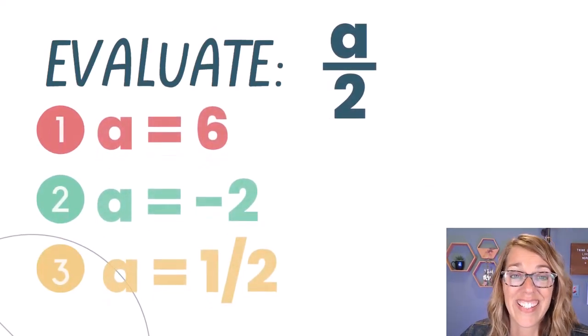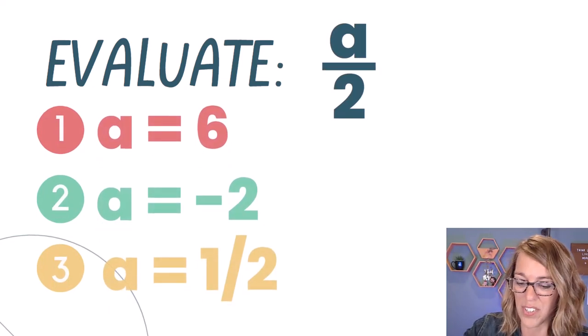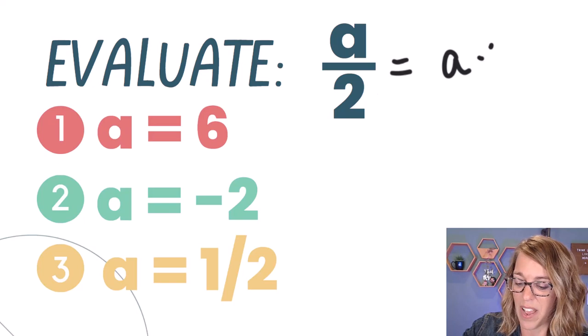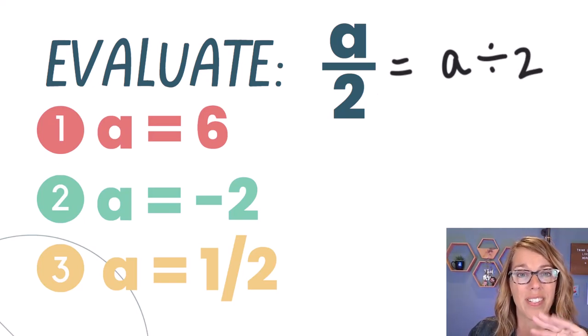Let's look at this next expression. So we want to find the value of a, a is my variable, divided by two. So this is a over two, but I can write that as a divided by two. Now I really like the fraction notation, a over the two, because it's just a little simpler to write.